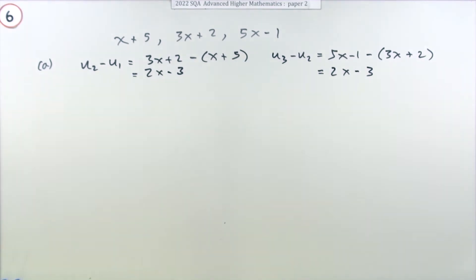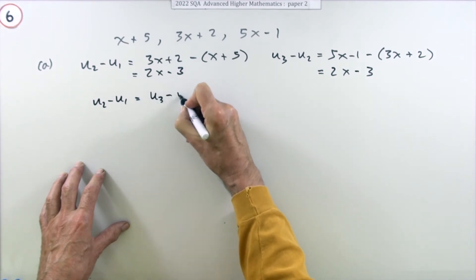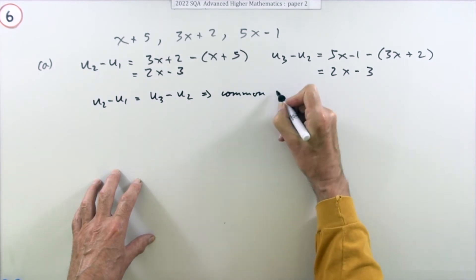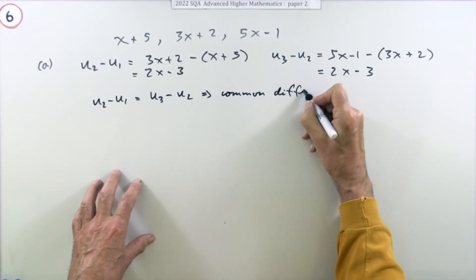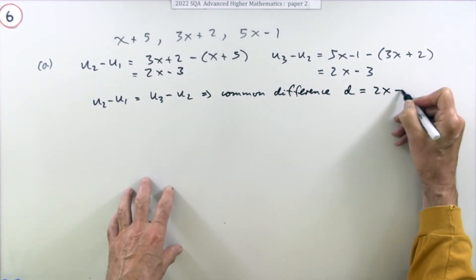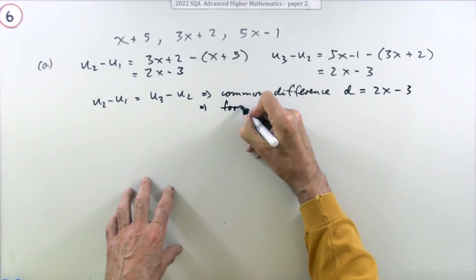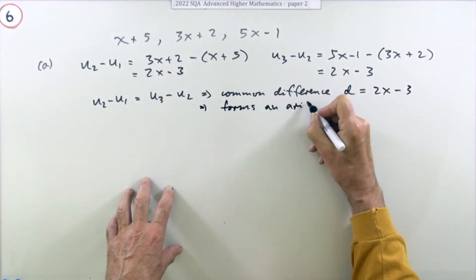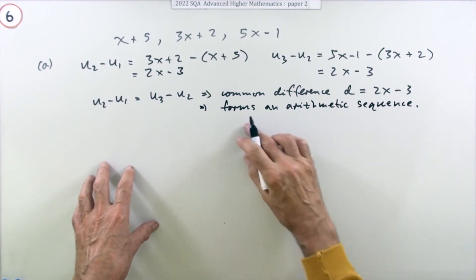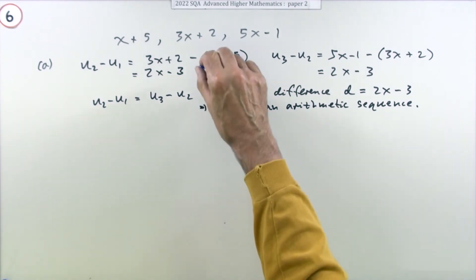Well, they're the same, so you've got a common difference. I could say u2 minus u1 is equal to u3 minus u2, which means that you've got a common difference. Common difference d equals 2x minus 3. Maybe I should also say which means it forms an arithmetic sequence. Not sure how much I actually have to write down, but it did say show it forms one, so you have to show they've got a common difference.